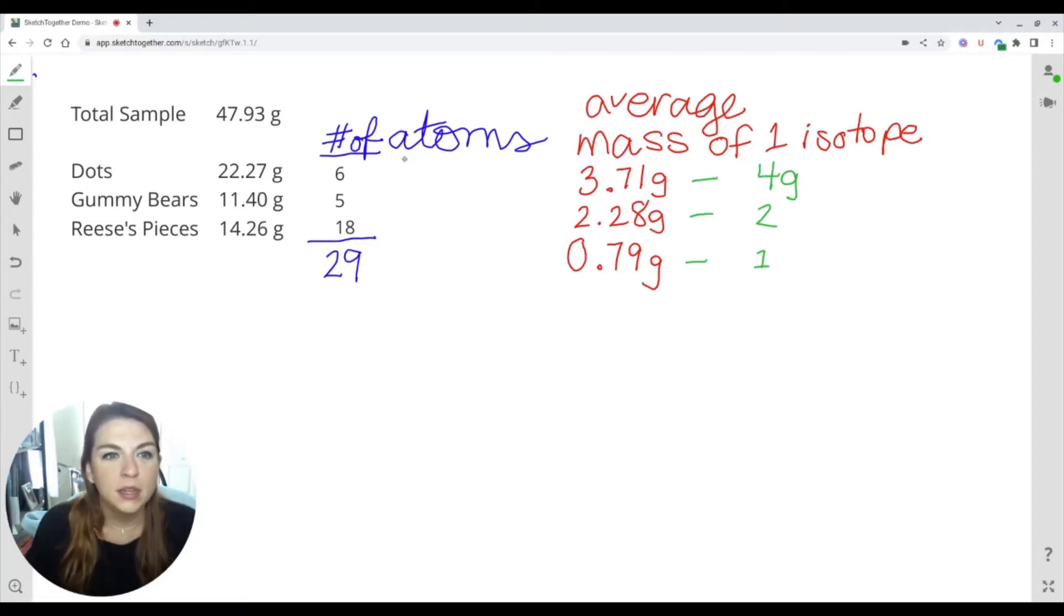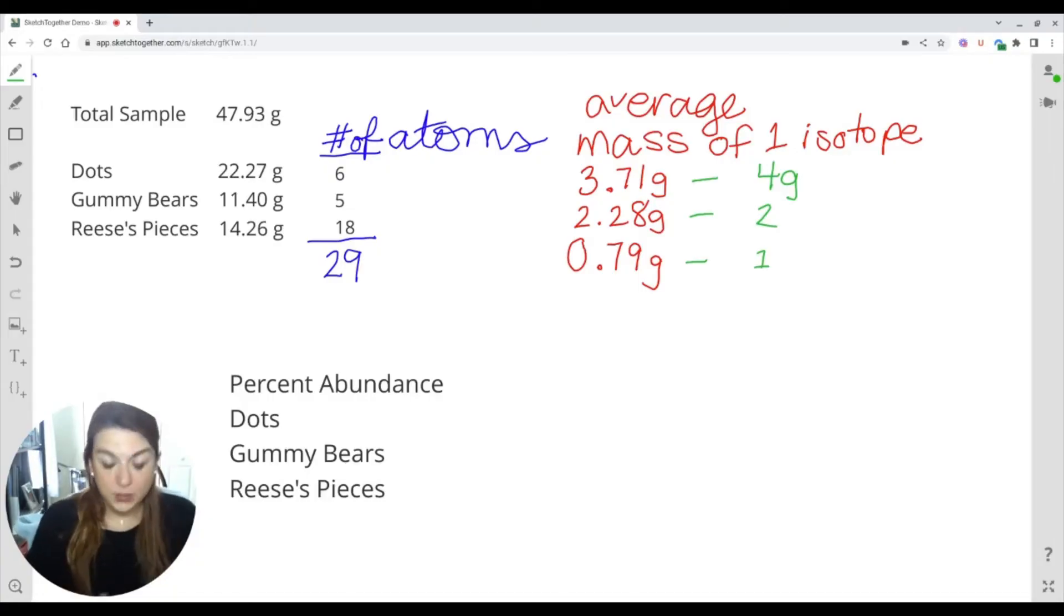We'll also need to determine the percent abundance of each of these isotopes, which is going to be the total number of atoms divided by the total number in the sample. So dots represents 6 of 29, okay. So the percent abundance on the dots is 6 of the 29 total, giving me 20.69%. The gummy bears are 5 of the 29, representing 17.24%. And then lastly, the Reese's Pieces should be the rest: 18 of 29 is 62.07%. This might be off a teeny tiny bit because of rounding, and if we're off, it's going to be in the decimals place.